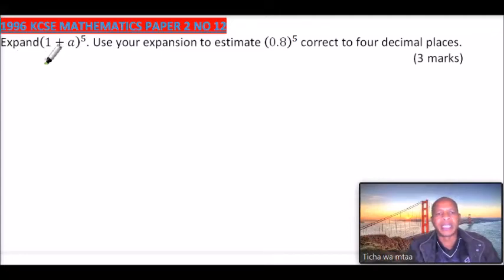Question number 12 of 1996. We are told expand (1+a)^5. Use your expansion to estimate (0.8)^5 correct to 4 decimal places. You get 3 marks.